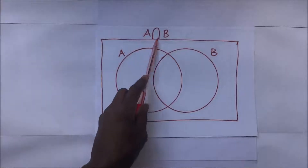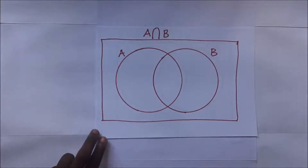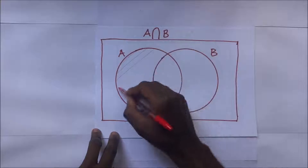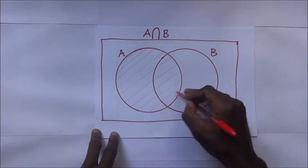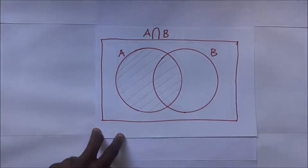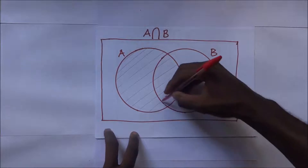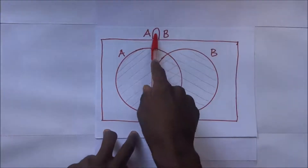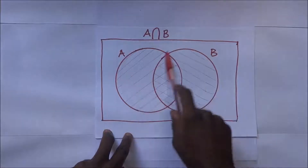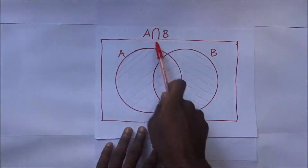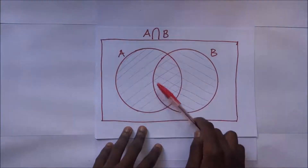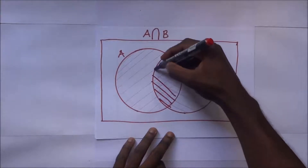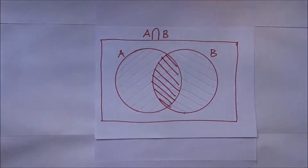In shading A intersection B, we need to first discover where the intersection lies. We are going to first shade set A using lines going in one direction, then shade set B using lines moving in the reverse direction. The intersection is where these two sets are meeting — where the lines are intersecting. So A intersection B is this middle part, because that is where the lines are crossing each other.